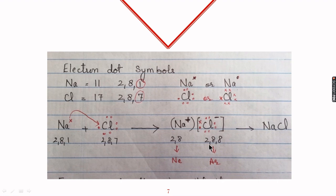Chlorine achieves the inert gas configuration 2, 8, 8 — that of argon. Sodium forms the Na⁺ ion and chlorine forms the Cl⁻ ion. There is a force of attraction between the two ions, which is called an ionic bond, and we get the ionic compound sodium chloride, NaCl.